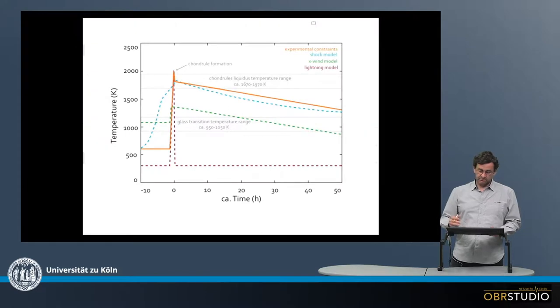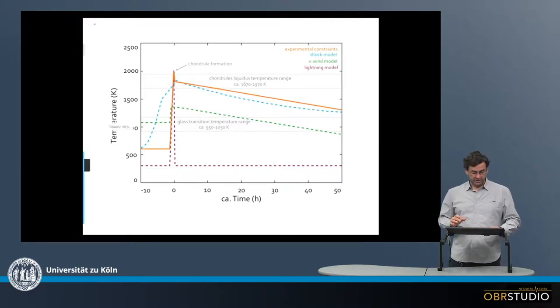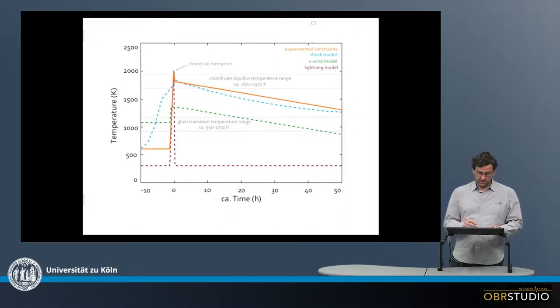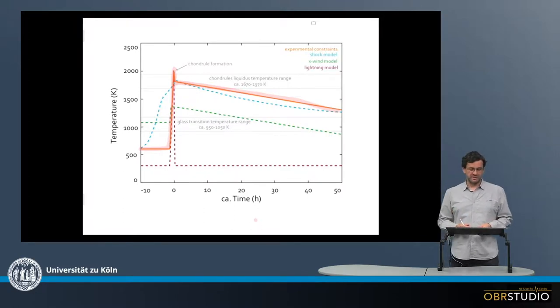And then we can look how we can explain this kind of temperature path, which is again shown here. So here's this temperature path again, which has also been reproduced experimentally from just thinking about a chondrule. And this reproduced experimentally is this orange line here. And this fits quite well with what we observe in the chondrules themselves.